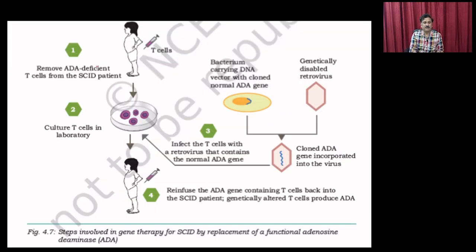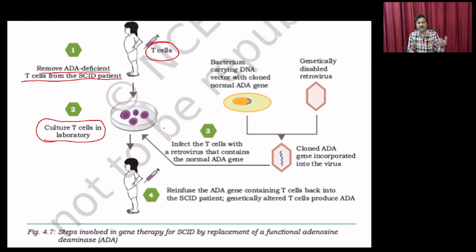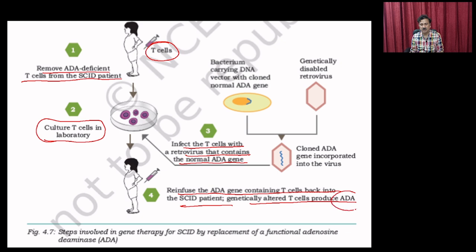A simple example is removing ADA-deficient cells from SCID patients. You remove T cells from the patient, culture them in the laboratory, then infect these T cells with a retrovirus containing normal ADA genes. The retrovirus delivers the ADA gene into the genome of the cultured T cells. You then reinfuse these ADA gene-containing T cells back into the patient, and the genetically altered T cells produce ADA.